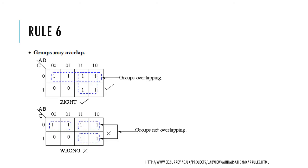Rule number six: groups may overlap. Returning to the example with six ones, combining the first group of 4 and the second group of 4 means two cells appear in both groups. This overlapping is allowed. If forming a larger group requires a cell to appear in more than one group, that is permitted — which is why we prefer the two overlapping groups of 4 over three separate groups of 2.